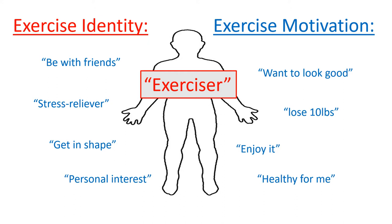So what is exercise identity and what is exercise motivation? Exercise identity is how much one comes to identify with exercising. For example, they may term themselves an exerciser, a gym goer, a recreational lifter, an athlete, or someone who takes part in physical activity. On the other hand, motivation is the various reasons why someone might take part in exercising. They may have certain goals in mind, or they might just see it for the pure enjoyment of the activity, but there's some sort of motivation to engage in exercising.